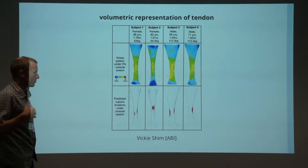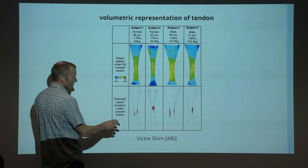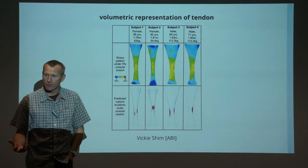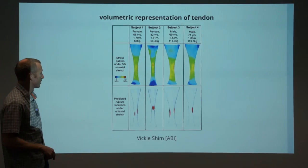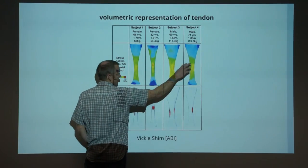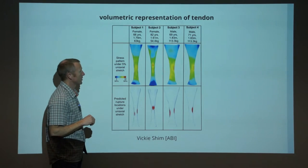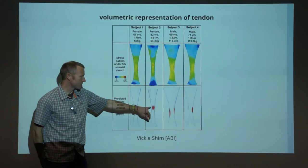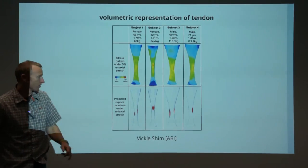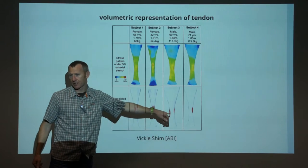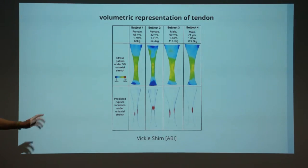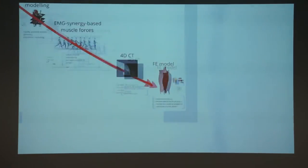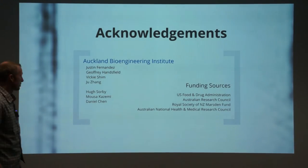Vicky Shim's work treats the Achilles tendon as a volumetric representation rather than a line segment. With different patients you get different stress distributions, and you can characterize different loads and boundary conditions and predict regions of rupture under different load conditions — dictated by both geometry and material properties. That's the direction we're moving, away from line-segment representations.